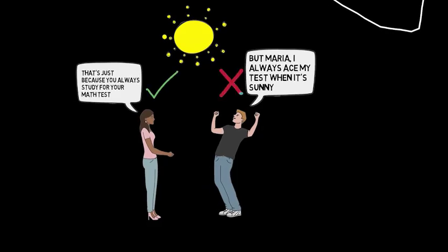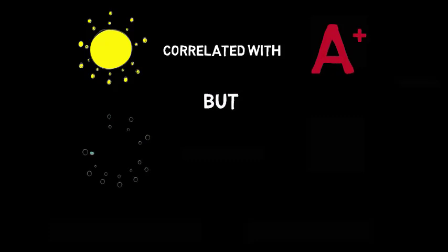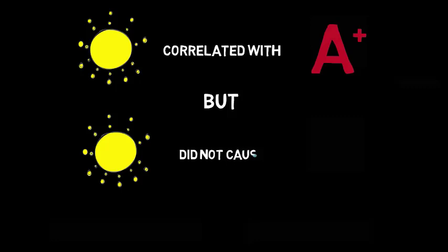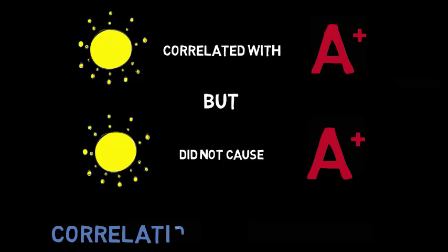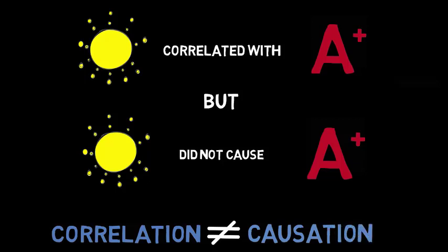Maria is correct. Andy is making a mistake. The sunniness doesn't cause Andy to ace his test. The two events—the sunniness and Andy acing his test—occur together without one causing the other. In other words, the two events are correlated in some way but there's no causal relation between them. Andy's reasoning here is fallacious. Simply because two events are correlated does not mean that one caused the other. This conflation of correlation and causation is what we will talk about in this video.